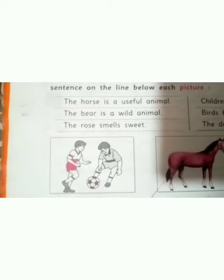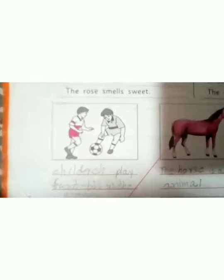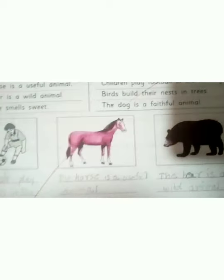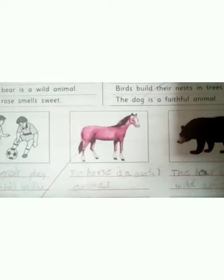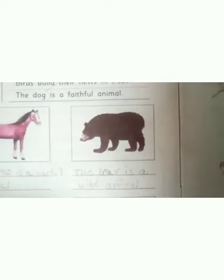We have to pick out from the box a sentence for each of the pictures and write the sentence on the line below each picture. Children play football in the evening. The horse is a useful animal. The bear is a wild animal. Birds build their nests in a tree. The rose smells sweet. The dog is a faithful animal.